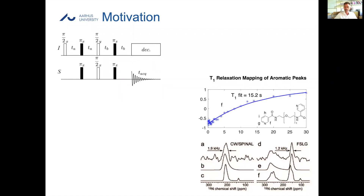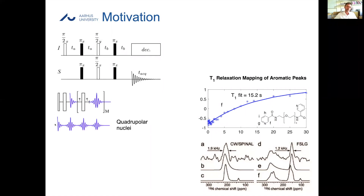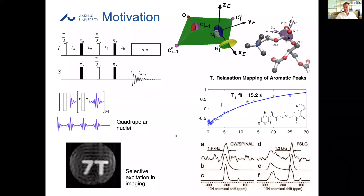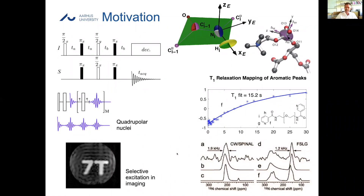It could also be simpler - you just have to fit data from inversion recovery experiments. If you work with quadrupole nuclei using the CPMG experiment, you face real challenges because quadrupole nuclei are generally difficult. We also have people doing imaging who make pattern-selective excitations, and in solid state we have to be concerned about the orientation of different tensorial interactions. Different tools are needed to analyze data in these cases.